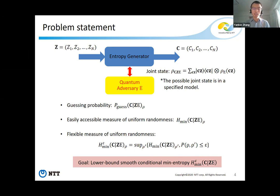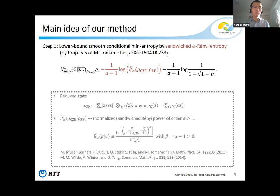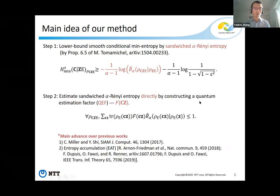Our goal is to provide a lower bound on smooth conditional min entropy without knowing which state describes experimental results. We developed a method for arbitrary randomness generation schemes. The main idea: we first lower bound smooth conditional min entropy by sandwiched Renyi entropy. Then we construct a quantum estimating factor, QEF, to directly estimate sandwiched Renyi entropy. This is a major advance compared with previous methods.